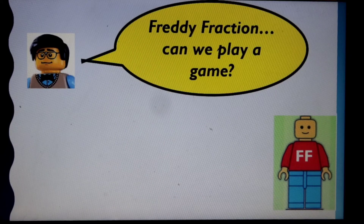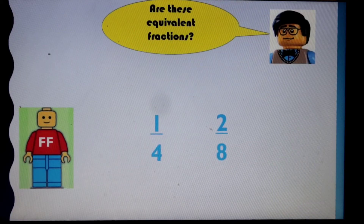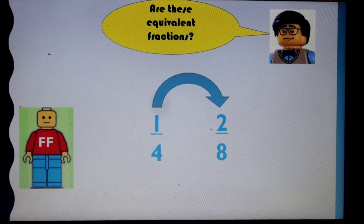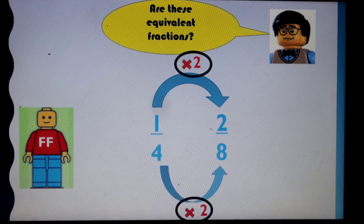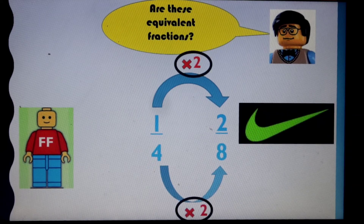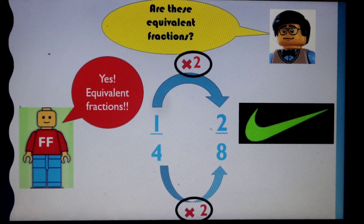So Freddie Fraction, can we play a game? Let's try to find equivalent fractions. Are these equivalent fractions? Think about it — you can pause the video now if you want. So what you should have done is one times two, and then four times two. We circle the two numbers — they are both multiplied by two, so they are equivalent fractions. Equivalent fractions — totally awesome.